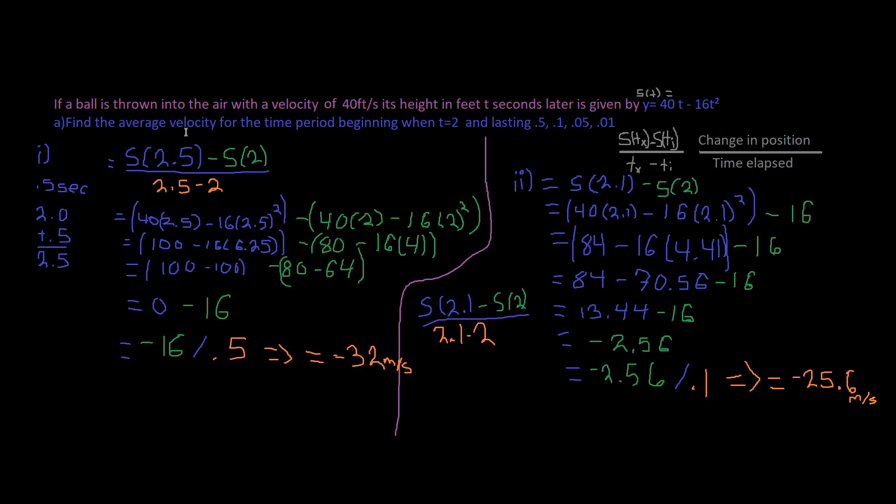Part A: Find the average velocity for the time period beginning when t equals 2, and lasting 0.5, 0.1, 0.05, and 0.01 seconds.